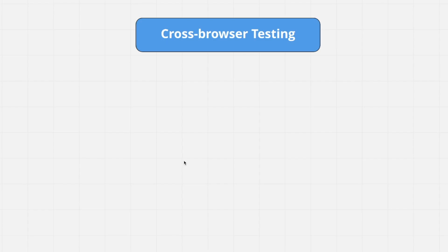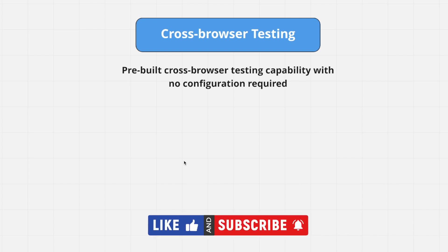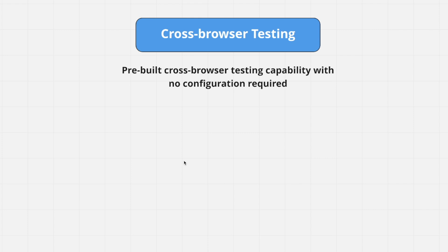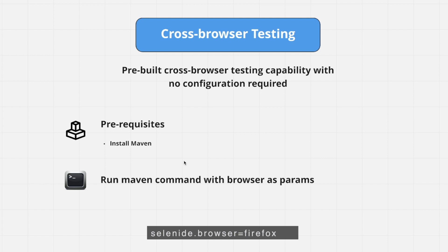In this video we're going to take a look at how we can do cross-browser testing with Selenide. One of the good things with Selenide is that cross-browser testing comes pre-built — you do not have to do any configuration. The only prerequisite is that you need to have Maven installed. Once you do, you simply run the Maven command with the browser as a parameter, for example specifying Firefox.